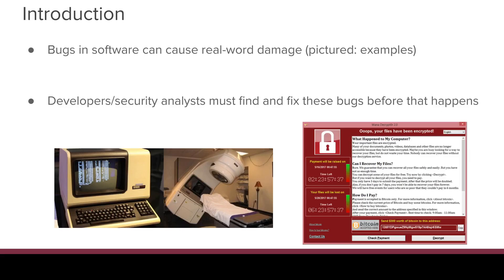Bugs in software can cause serious real-world harm to people. On the left is the Therac-25 Computer-Controlled Radiation Therapy System — basically a computer hooked up to a radiation gun, running software to help doctors figure out how much radiation to give patients. Unfortunately, it had a race condition that would cause it to give way more radiation than intended under certain circumstances, and that killed multiple people.